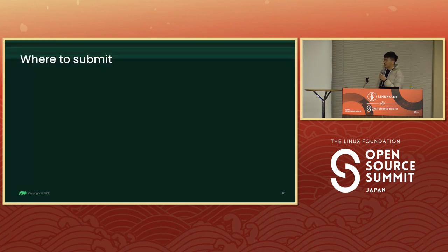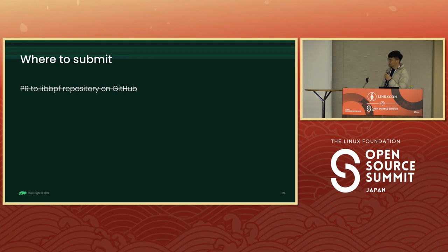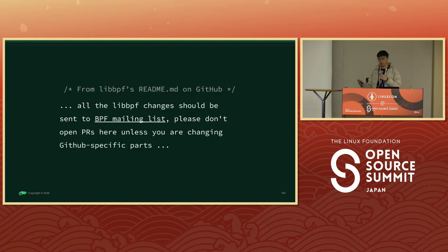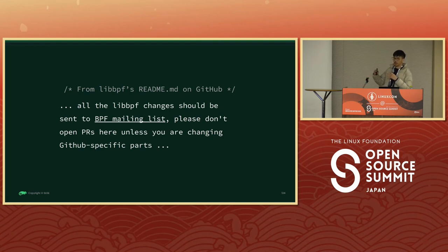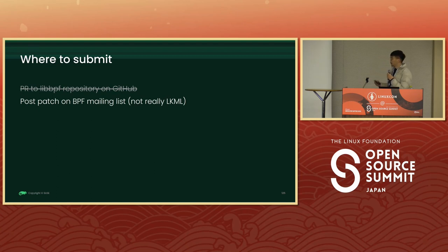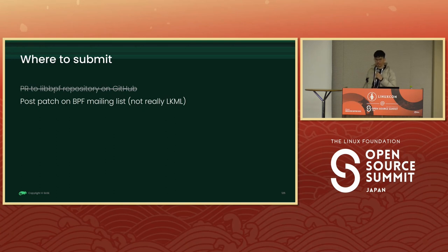If you just ask a random project where you should submit changes, you can say GitHub and you'll be right like 90% of the time, but not for libbpf. Although libbpf has a repo on GitHub, the changes should be submitted to the BPF mailing list because libbpf is integrated into the Linux kernel source code. For that, we have to post our patch to the BPF mailing list. So it's not really LKML — the subject of this talk is kind of off, but please forgive me. The process is close enough, so what I'm going to say next should apply to LKML as well.